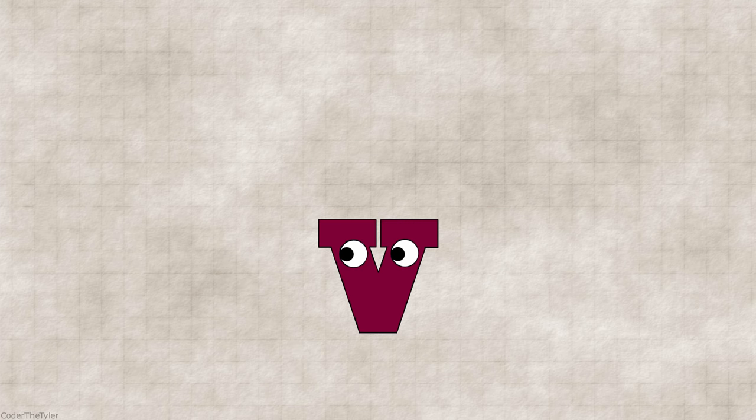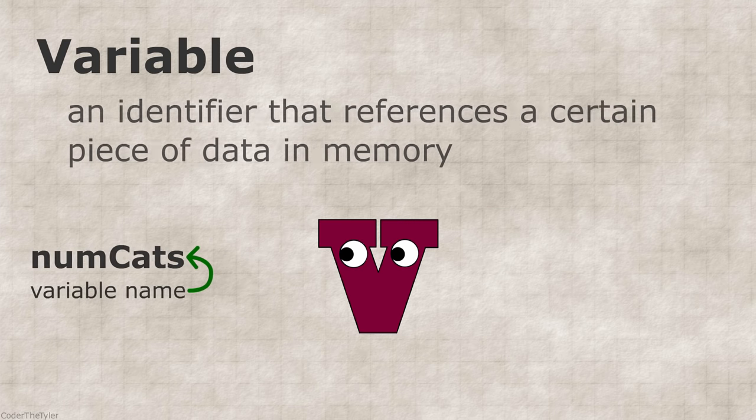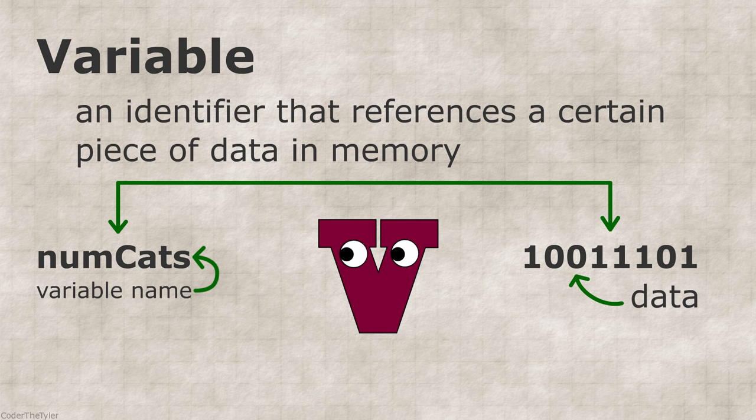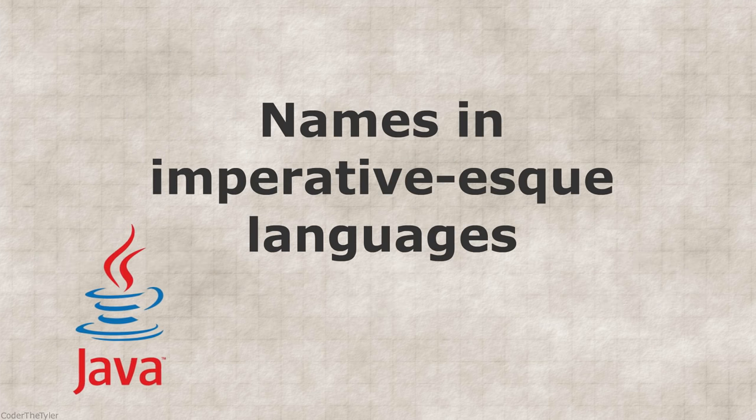And to be a bit more technical, a variable is more of a label given to a piece of data in the computer's memory, and then through this label we can access that data. This trend of giving things names occurs quite often in imperative-esque languages, including Java.